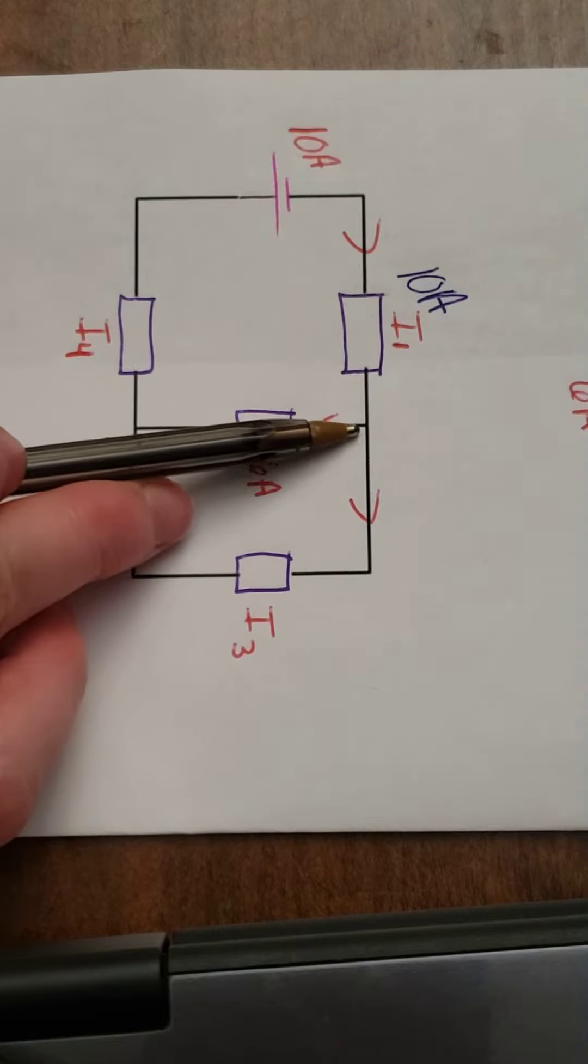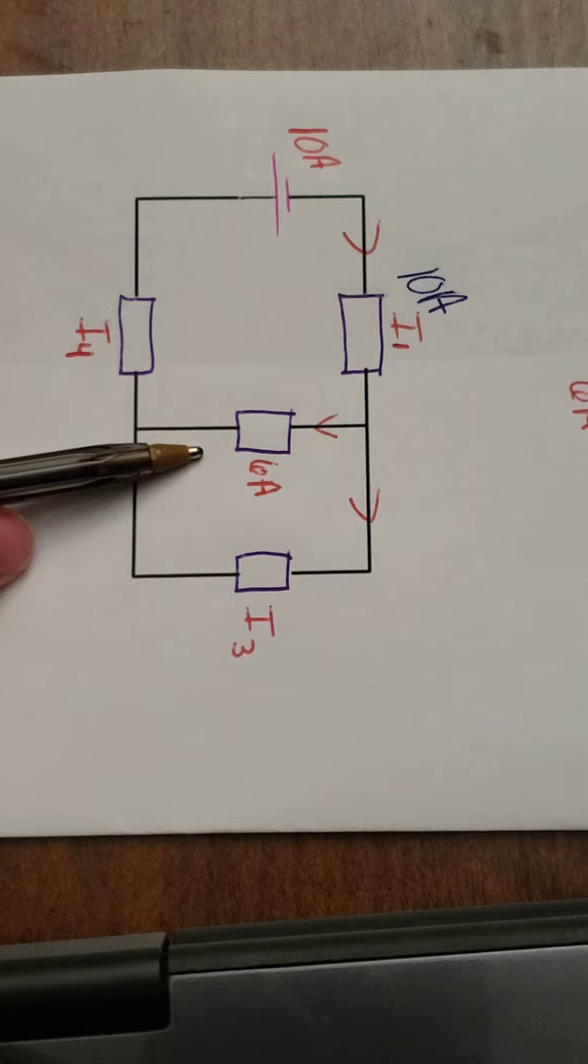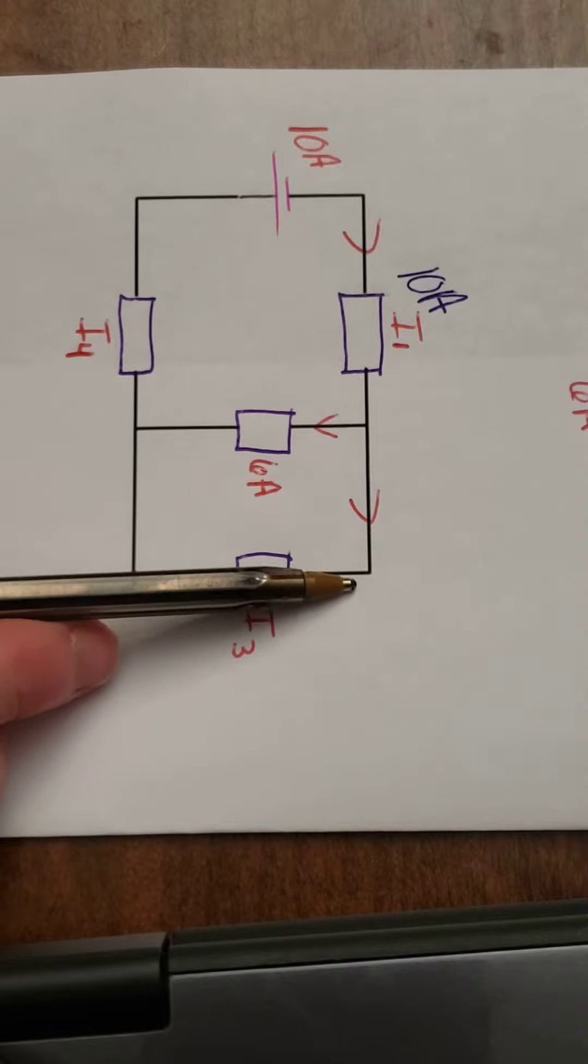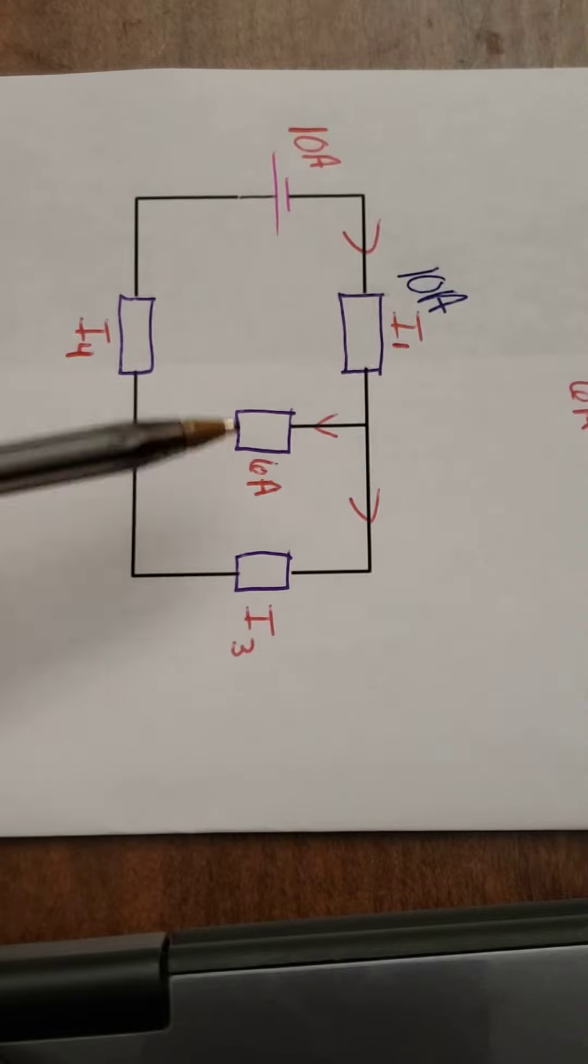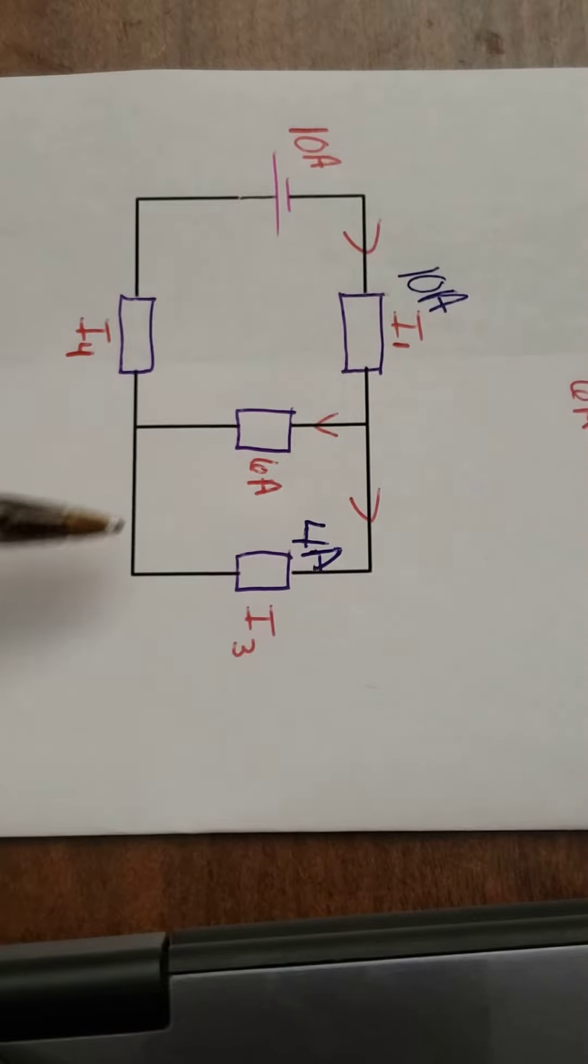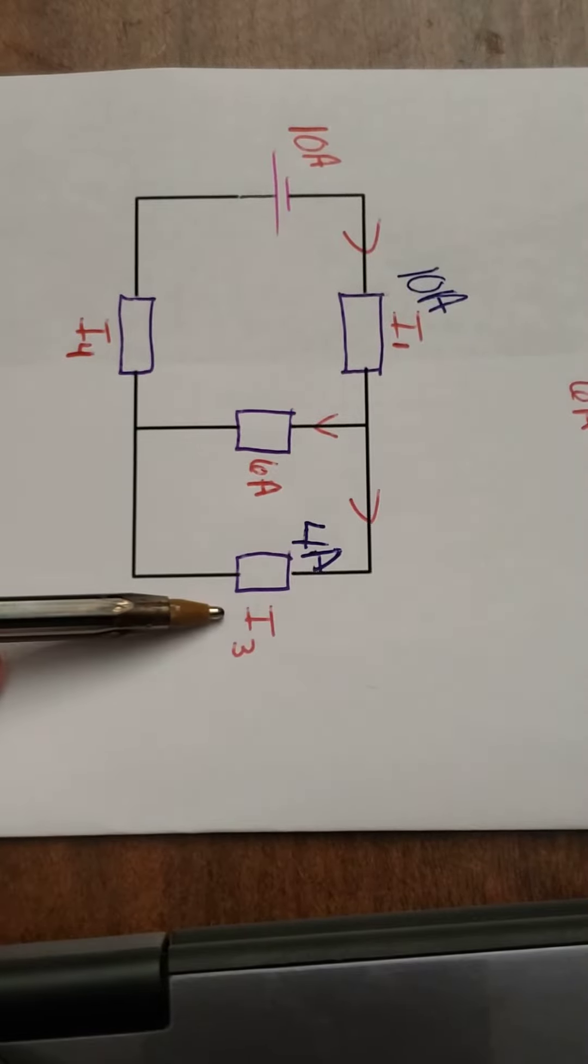Now, there's a branch. 6 went down. So 6 packages of electrons, or 6 amps of electrons, went this way. So going this way must be 10 minus 6, which is 4. So 4 amps went through the third resistor.